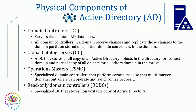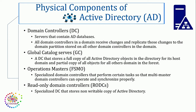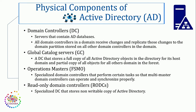Now let's talk about the physical components of AD. A domain controller is basically a Windows server that contains the Active Directory database. All domain controllers in a domain receive changes and replicate those changes to the domain partition stored on all other domain controllers in the domain. The domain controller is the server where the Active Directory database is mounted, and this database contains all the information — like users, computers, and whatever object entries we have. Next, we have global catalog servers. A global catalog server is a domain controller that stores a full copy of Active Directory objects in the directory for its host domain, and a partial copy of all objects for all other domains in the forest. The other objects from other domains are also known as phantoms.